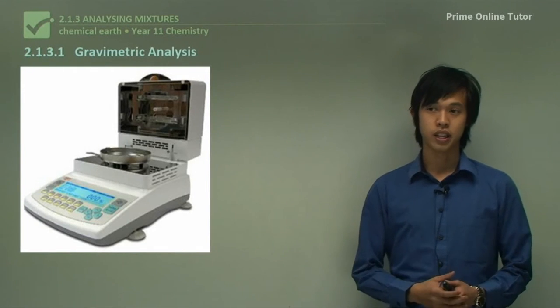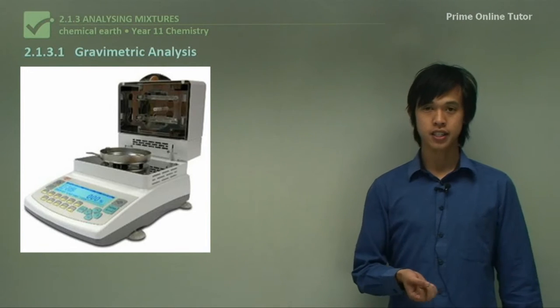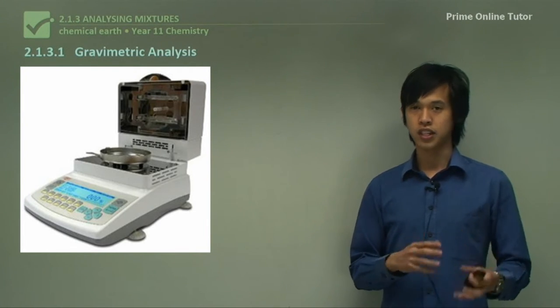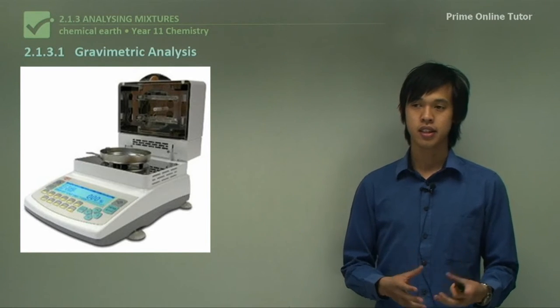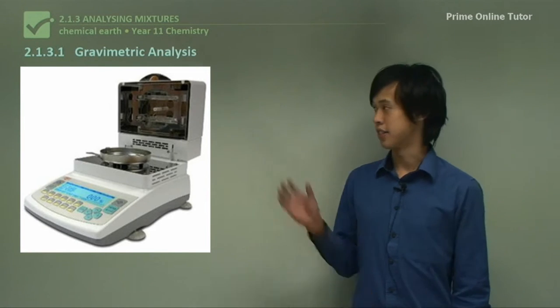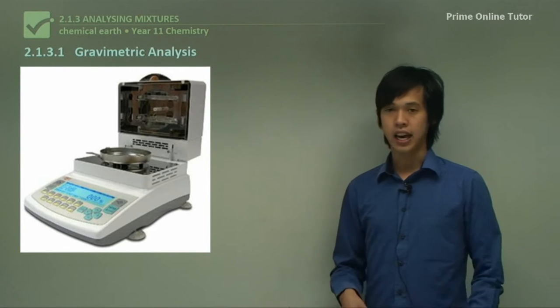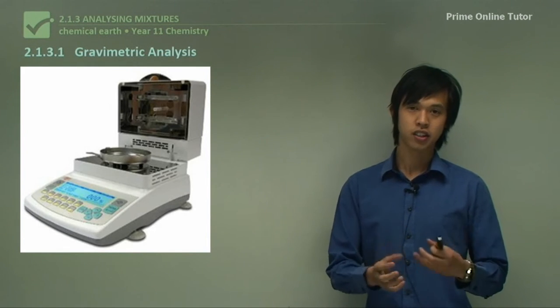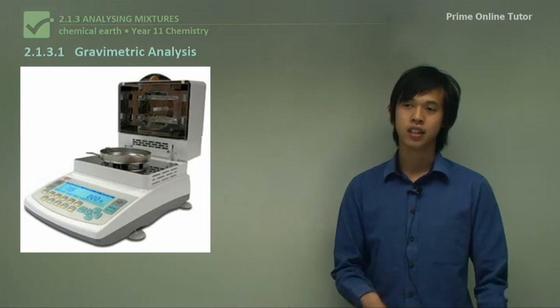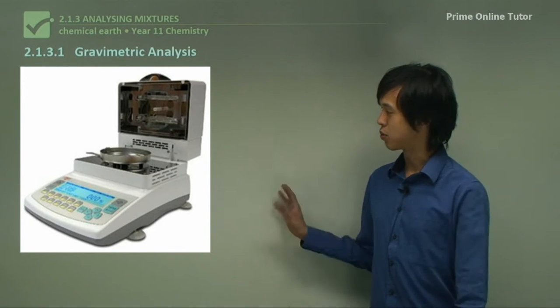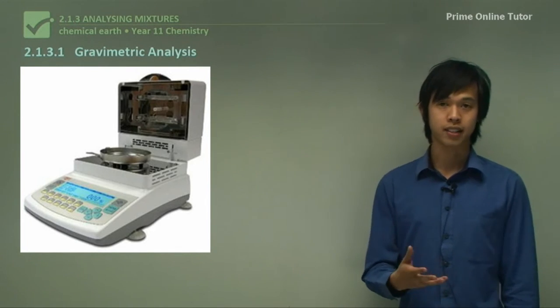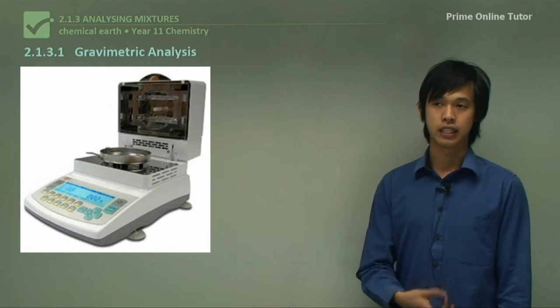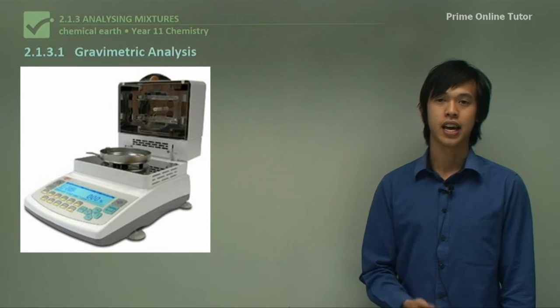So today's lesson will be a focus on gravimetric analysis. In chemistry we have lots of different types of analysis methods and one of the most important ones is this gravimetric analysis. You can hear it from the word, it's gravimetric, so it's relating to gravity. What that means is that this will probably have something to do with weight or mass. So gravimetric analysis usually has a focus on getting a mass quantity out.